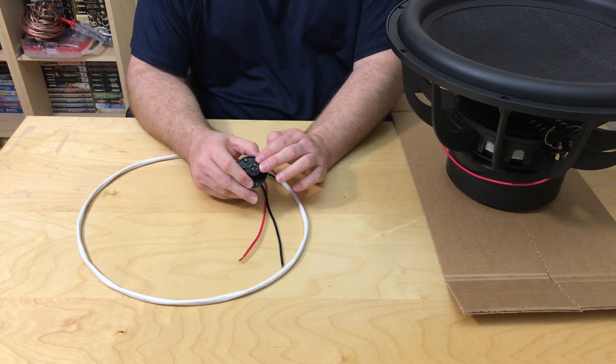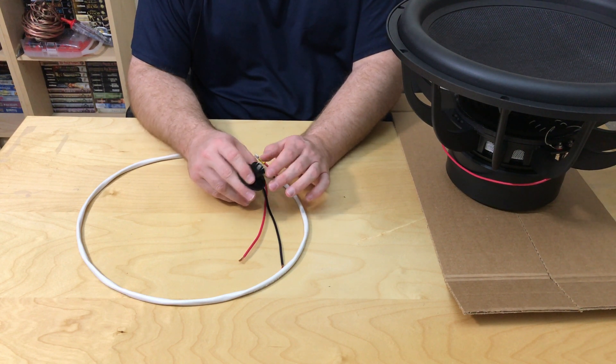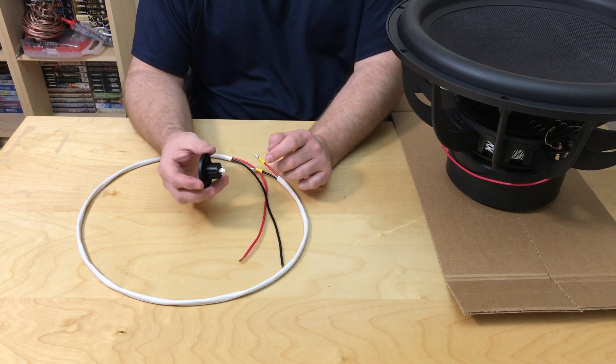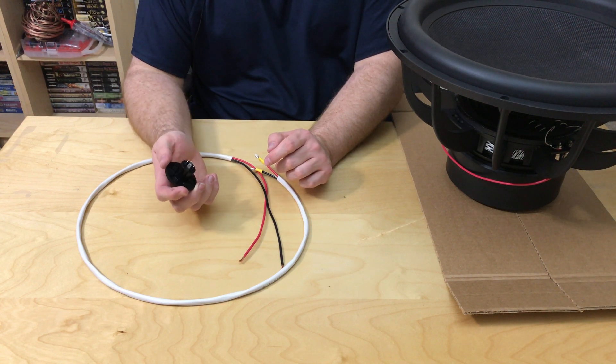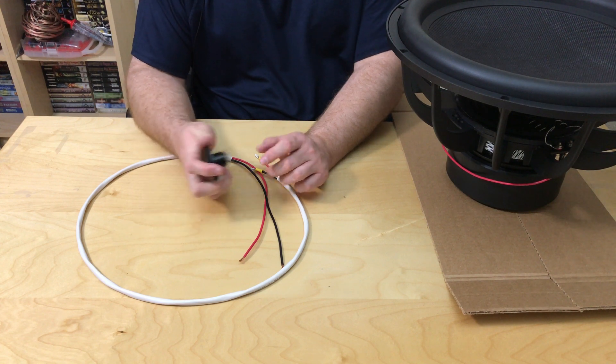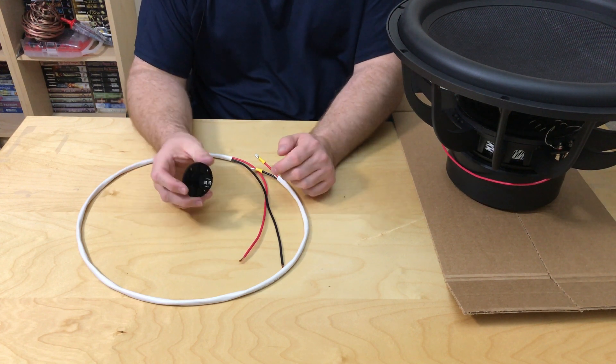So you can ignore the positive 2 and negative 2. That's just for a second set of leads inside of the wire. If you have normal connectors, then you'll just have a positive and negative. So the positive is the same thing as positive 1 and negative is the same as negative 1.